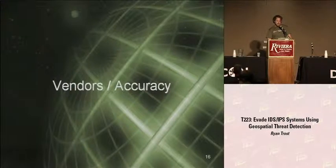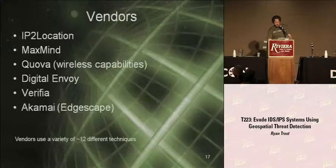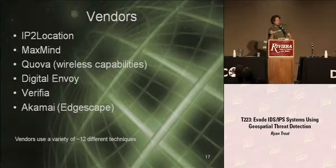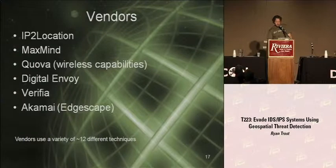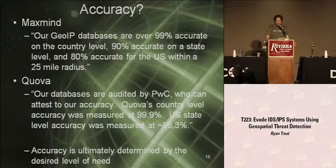Typically with this level of conversation, the biggest question is accuracy and vendors — who's offering these translation files and how accurate are they? The vendors I know of: IP2Location, MaxMind, Quova, Digital Envoy. The vendors are using approximately 12 different techniques to more accurately tell you where those lat-long coordinates are. These are two specific quotes off the vendors' websites: 'Our geo IP databases are over 99% accurate on the country level, 90% accurate on the state level, and 80% accurate for the U.S. within a 25-mile radius.' That's not too shocking. With MaxMind, though — who's actually auditing that? That could just as easily be a marketing ploy.